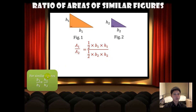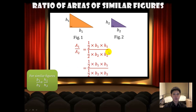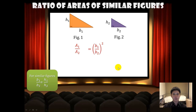To recall: for similar figures, the ratio of the corresponding lengths are the same, and hence we can replace h1 over h2 with b1 over b2. Cancelling out the common terms, we will have b1 over b2, squared.